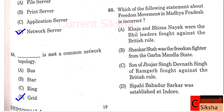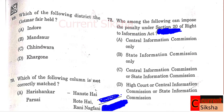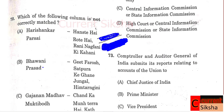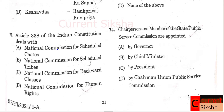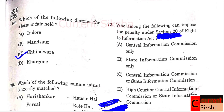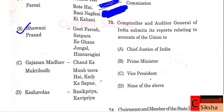Question 68: Which statement about the freedom movement in Madhya Pradesh is incorrect? Correct option D - Sipahi Bahadur Sarkar was established at Indore. Question 69: In which district is the Gautmer Fair held? Correct option C - Chhindwara. Question 70: Which of the following columns is not correctly matched? Correct option B - Bavaniprasad Mishra: Pharoosh Tathpura; K. Ghane: Jungle Himtar Gini. Question 71: Article 338 of the Indian Constitution deals with? Correct option A - National Commission for Scheduled Castes. Question 72: Who can impose penalty under Section 20 of the Right to Information Act? Correct option C - Central Information Commission or State Information Commission.